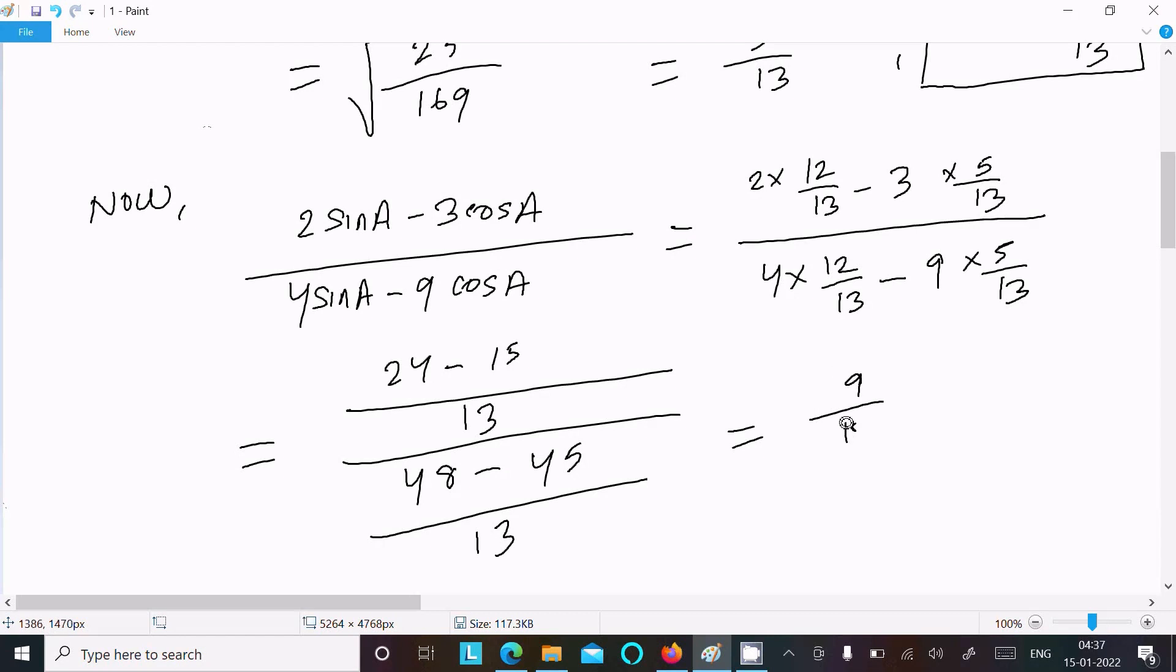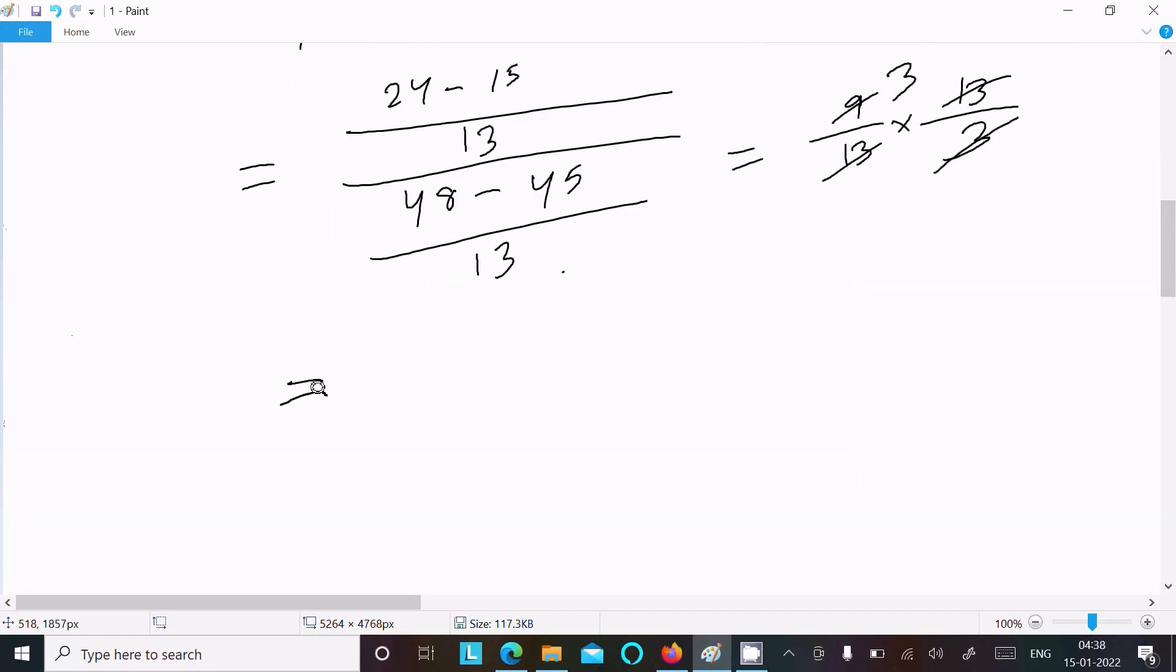This is 9/13 divided by 3/13. The 13s cancel, leaving 9/3, which equals 3. So 3 is the answer to this question.